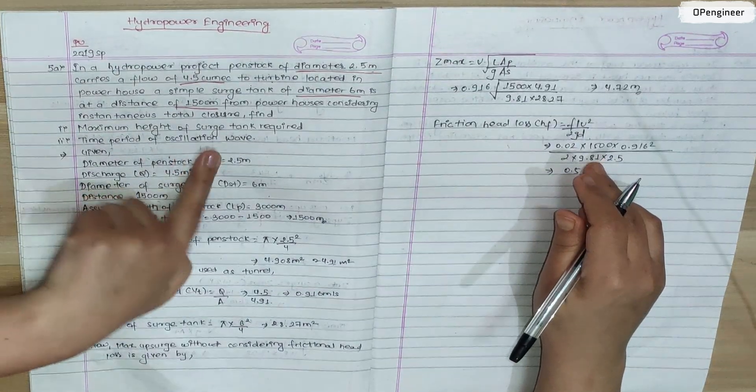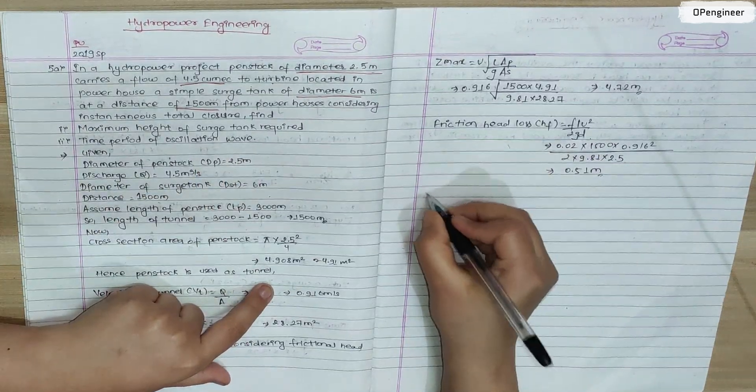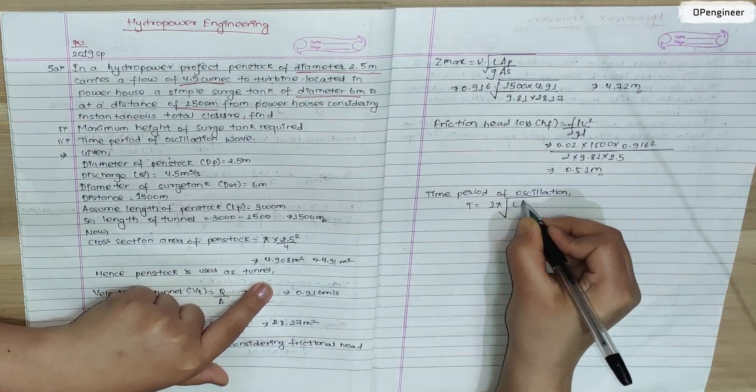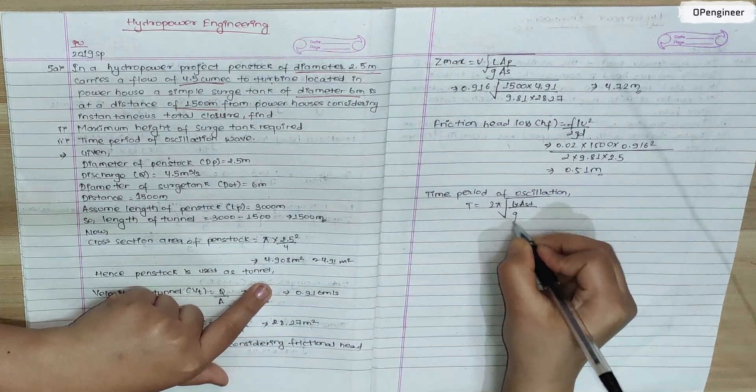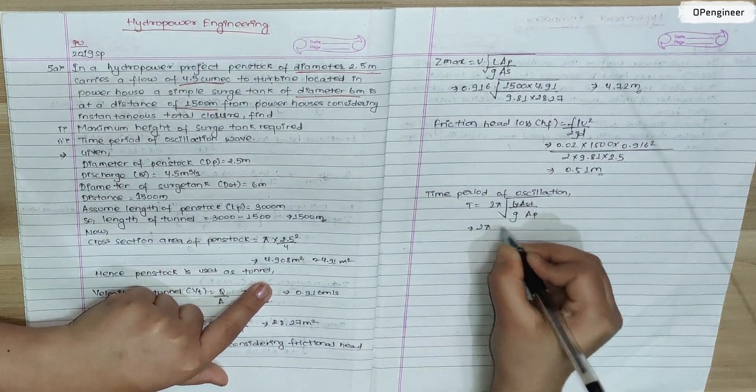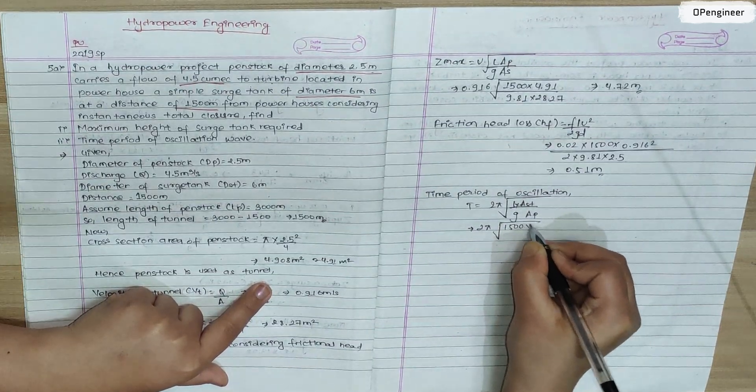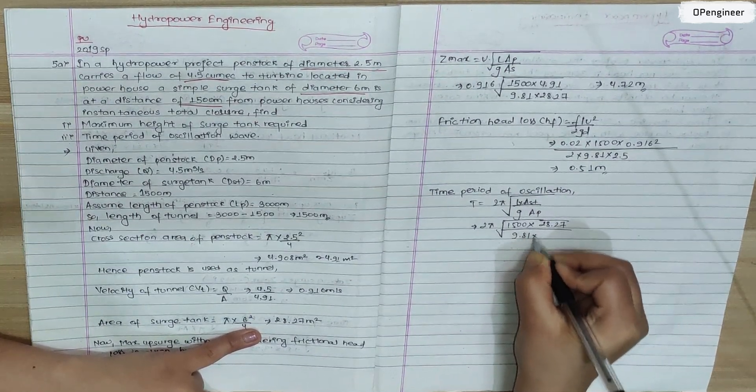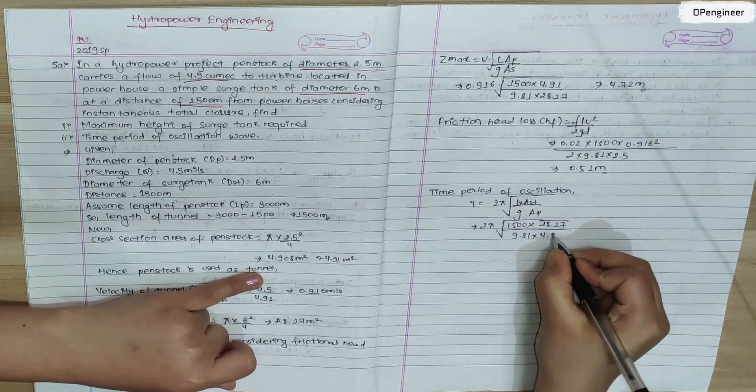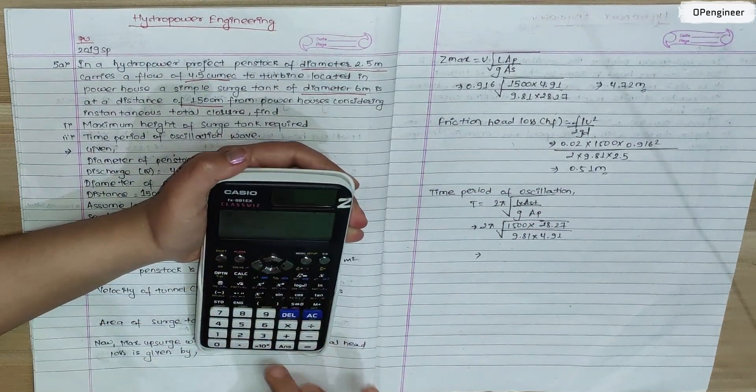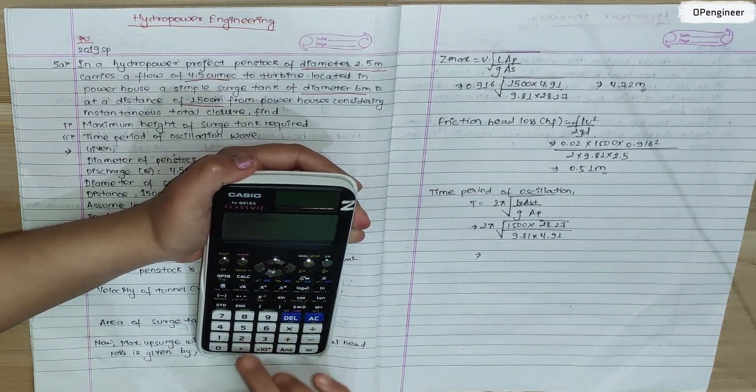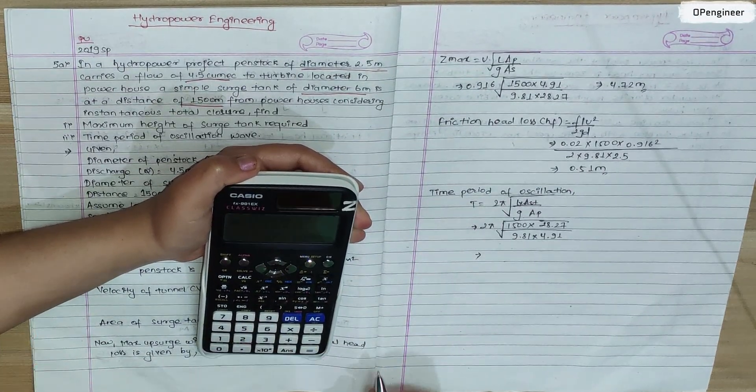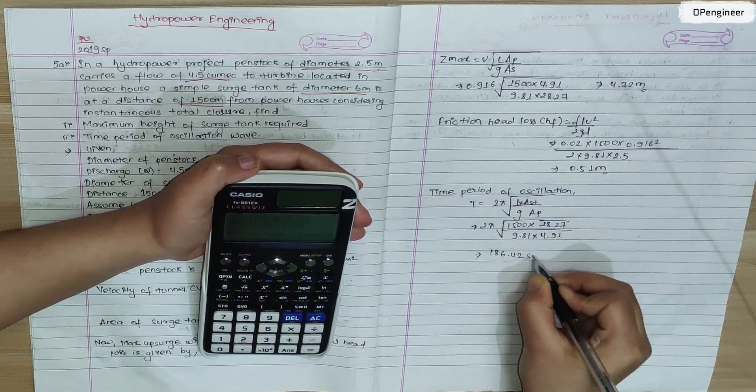Now this is the time period of oscillation. We have to calculate time period of oscillation. So formula is T equals 2 pi root over length times area of surge tank by G into area of penstock. So 2 pi, length is 1500, area of surge tank is 28.27 by 9.81 into area of penstock is 4.91. So solve this: 2 pi root over 1500 into 28.27 by 9.81 into 4.91. So solve this is 186.42 seconds.